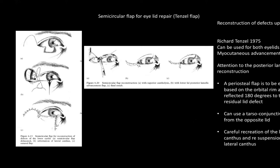For defects slightly bigger than can be closed by primary closure or cantholysis, Tenzel described a semicircular flap usable for both upper and lower eyelids, reconstructing up to 70% defects. For a lower lid defect, a skin incision is marked in a semicircular fashion about two to three centimeters wide just below the eyebrow. The canthal ligament is released and the skin — along with orbicularis muscle — is undermined, then the lid is approximated to the cut end on the other side.